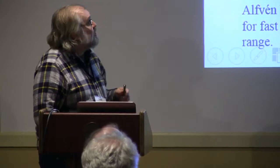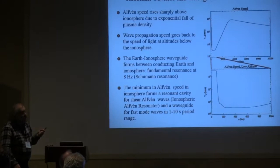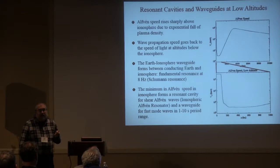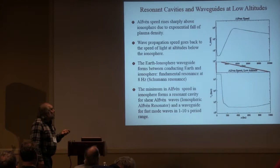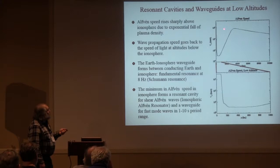I'm going to start at low altitudes and talk about resonant cavities and waveguides. This figure shows the Alfvén speed — the same one that Ian showed. At large Alfvén speed gradients, there's an impedance mismatch — a phrase George Reid used — that can cause reflections of waves. The ionospheric Alfvén resonator is this deep minimum in the Alfvén speed that occurs in and above the ionosphere.